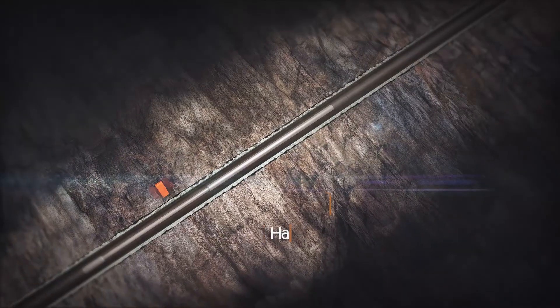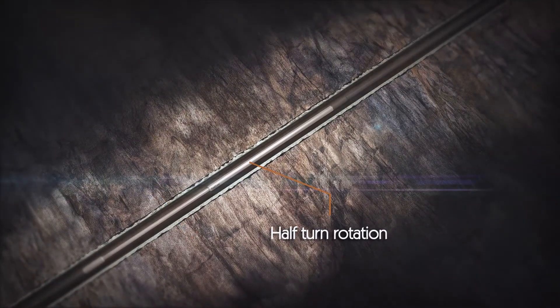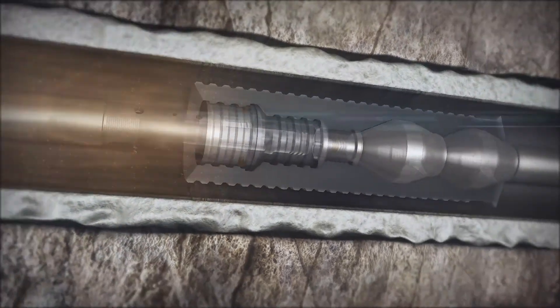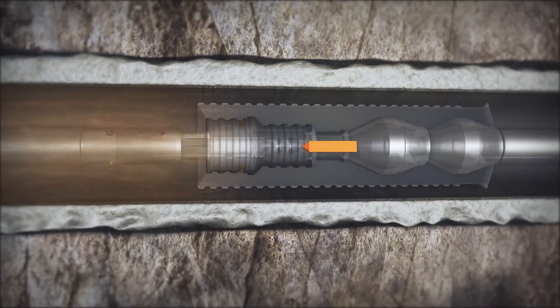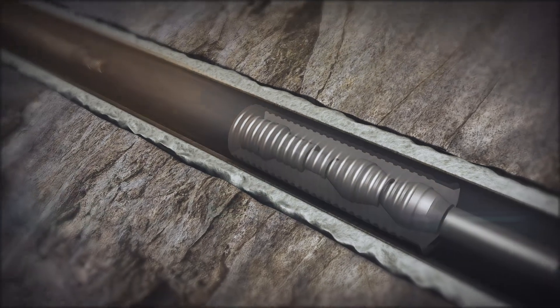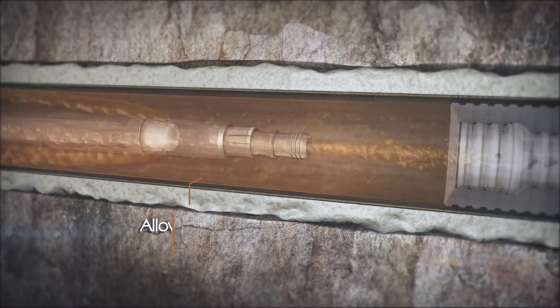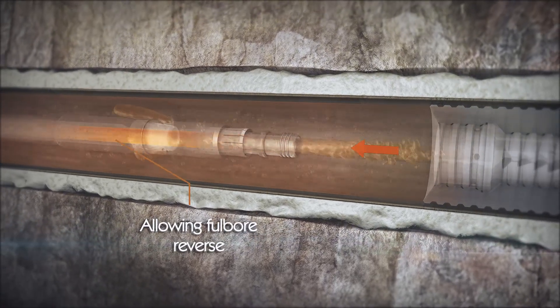Post setting, with the liner running tool free, the inner string can be picked up into tension to release the C-Cure assembly from the collar, enabling full bore forward or reverse circulation prior to pulling out of hole, ready to drill out of the PDC drillable shoe or collar.